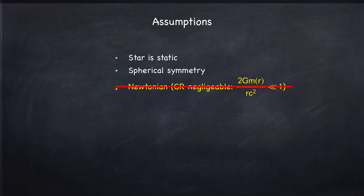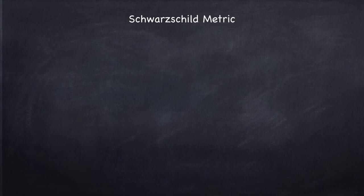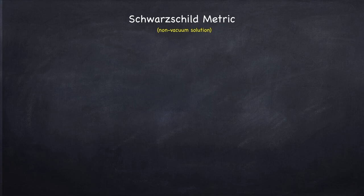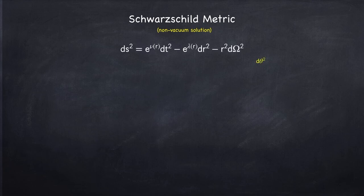First thing we have to do is set up our spacetime geometry. So let's start off by going over what's called the Schwarzschild metric. We're going to specifically look at a non-vacuum solution. If you've done any general relativity, you're probably familiar with the Schwarzschild metric for a vacuum solution, meaning outside of the star. Now we're going to do the same thing, but we're not in a vacuum — we're inside the star. In a Schwarzschild geometry, the spacetime interval will have the following form.